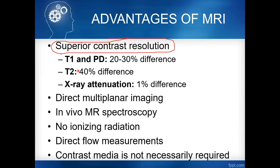That is the advantage of MRI — superior contrast resolution. To increase tissue contrast differentiation, choose T2. For anatomy, use T1; for pathology, use T2.